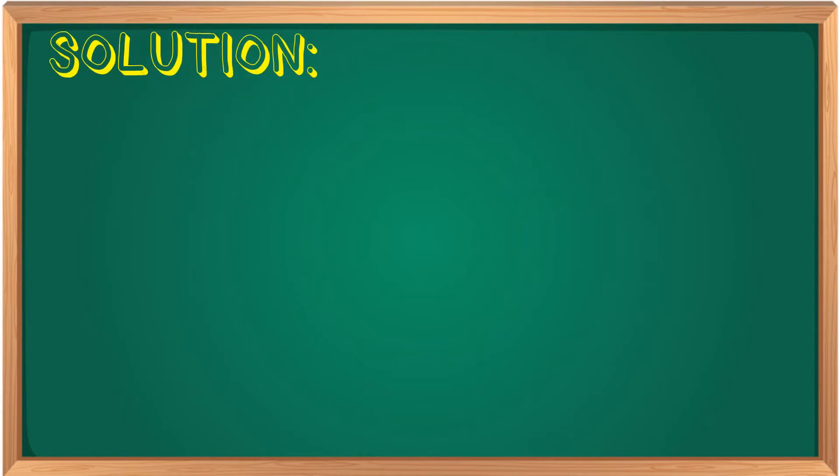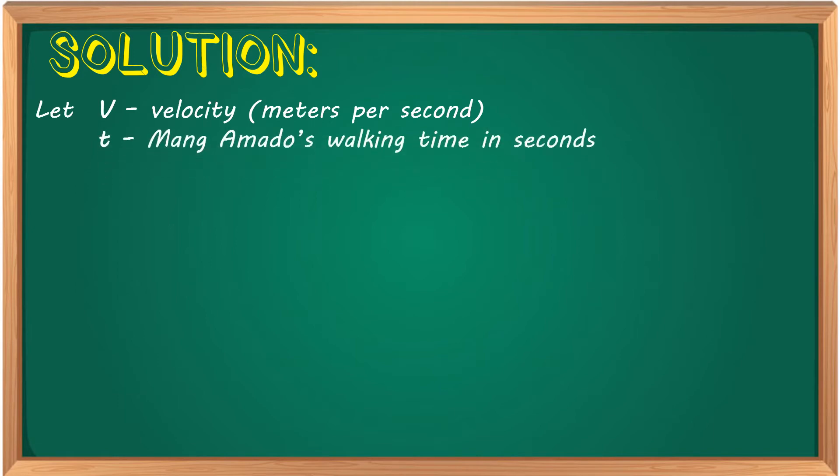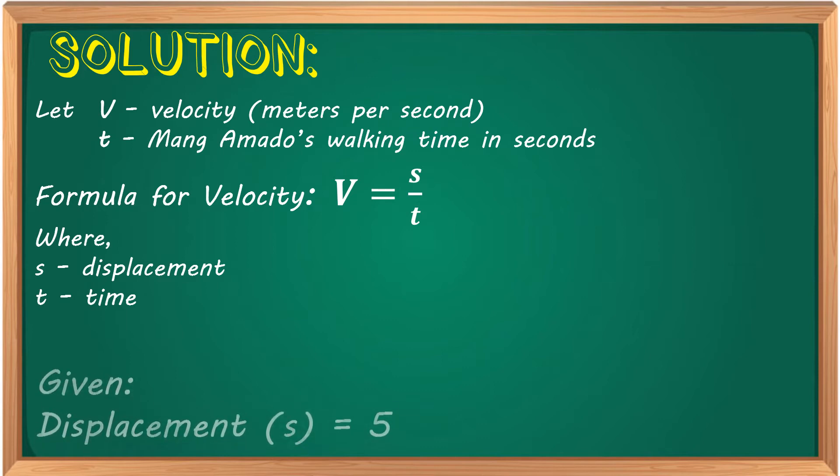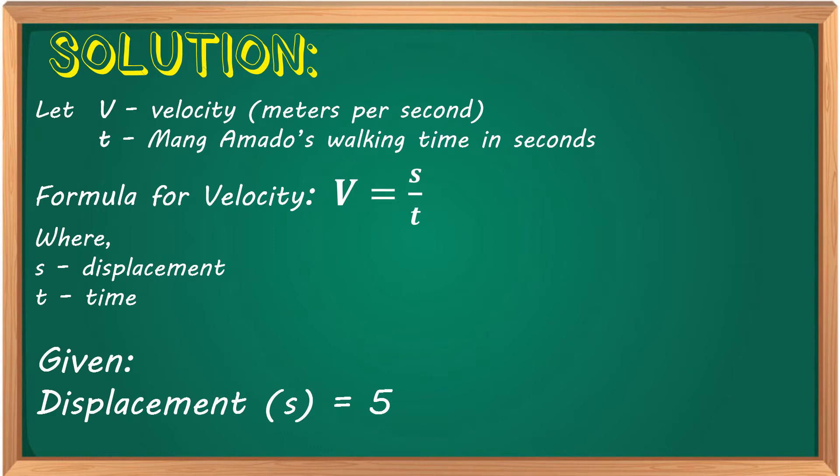Solution. Let's identify the keywords first. Let v be the velocity in meters per second, and t is Mang Amado's walking time in seconds. So, the formula for velocity is v = s/t, where s is the displacement and t is the time. But given in the problem is, the displacement s = 5. Remember, Mang Amado walks 5 meters per second west.